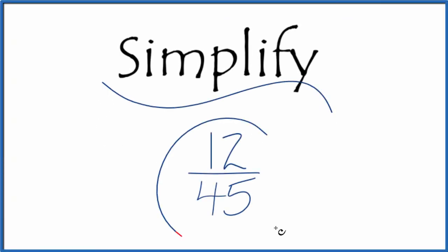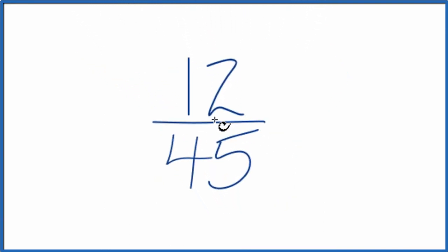Let's simplify the fraction 12 over 45. What we want to do is find another fraction that's equal to, an equivalent fraction as 12 over 45, but it's in lowest terms.